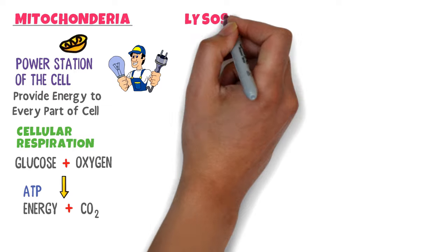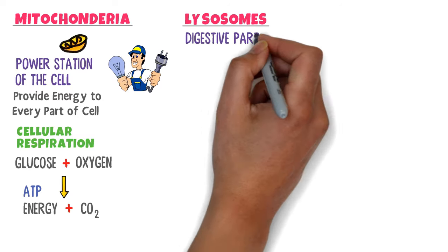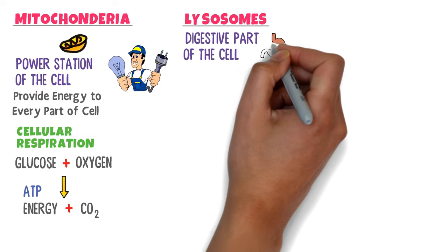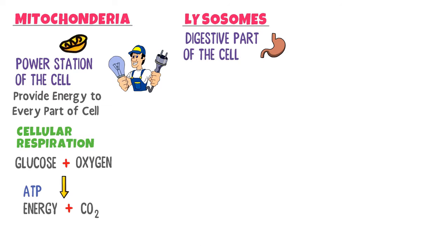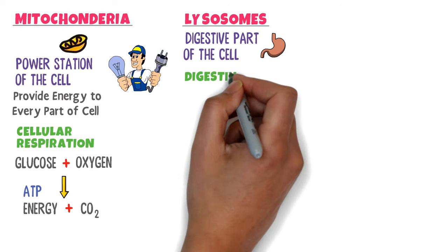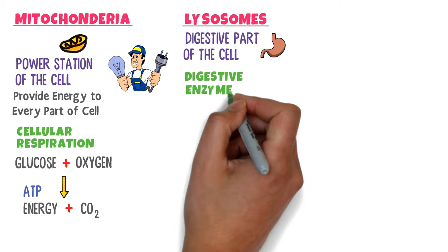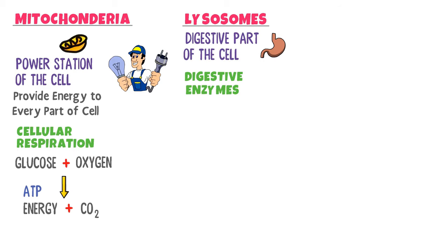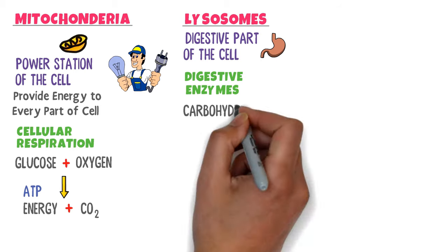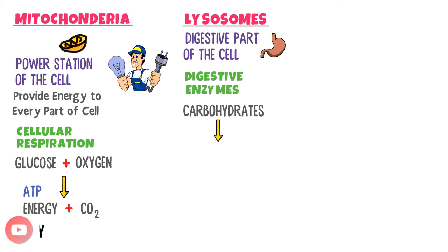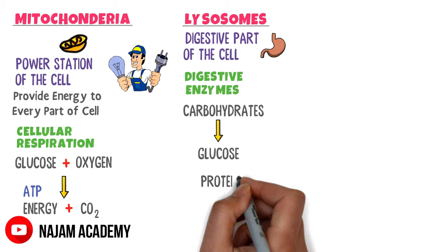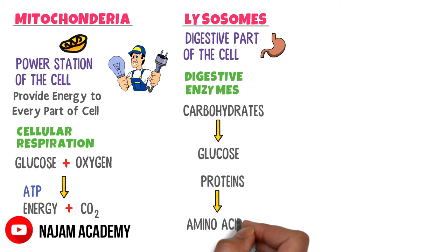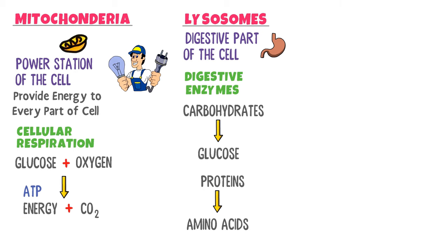What is lysosome? It is the digestive part of the cell. It contains digestive enzymes, and here food is broken down. For example, carbohydrates are converted to glucose, and proteins are converted to amino acids.